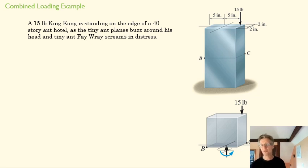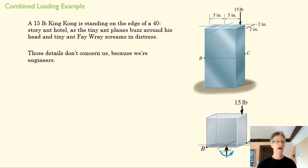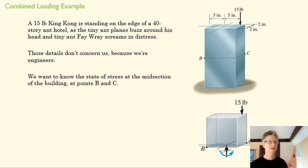Now let's do a problem. So that's really all that's left. There's nothing new here. We already know the principle of superposition. We're just going to start adding stuff together. So here's our problem. We've got a 15 pound King Kong. So he's a tiny little monkey. So our Fay Wray and our tiny airplanes are also respectively smaller. That monkey, he's just 15 pounds to us. He's just a force. He's just a vector. And we want to know the state of stress at B and C.